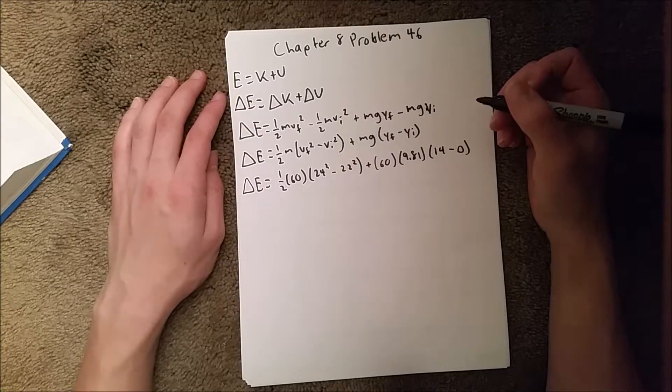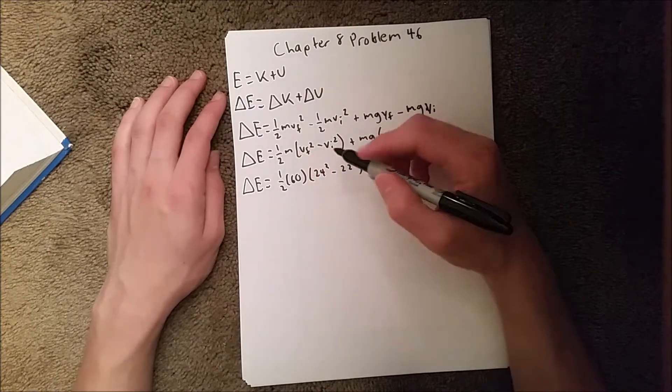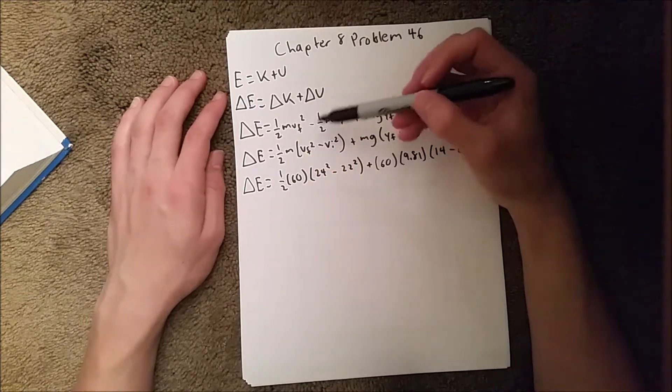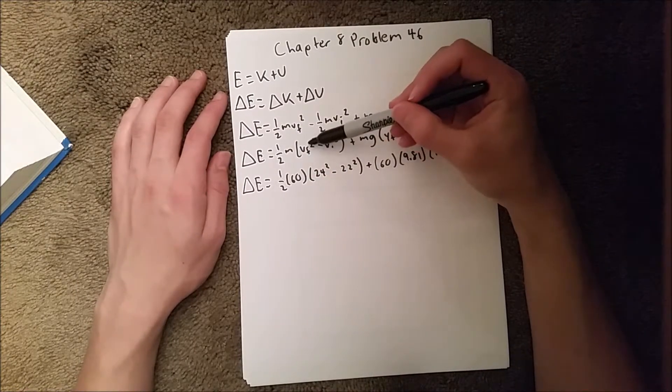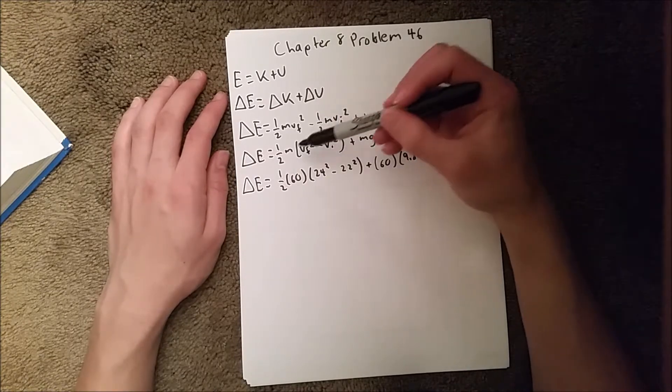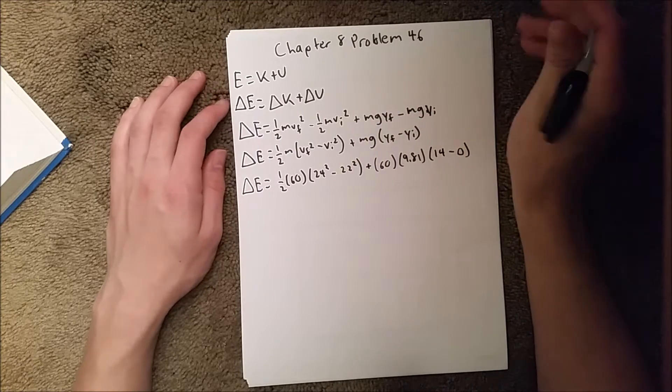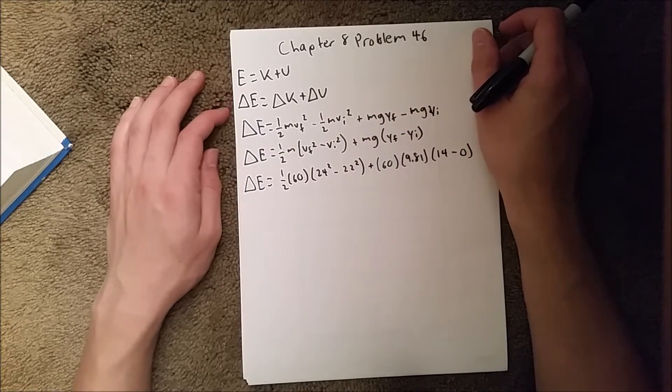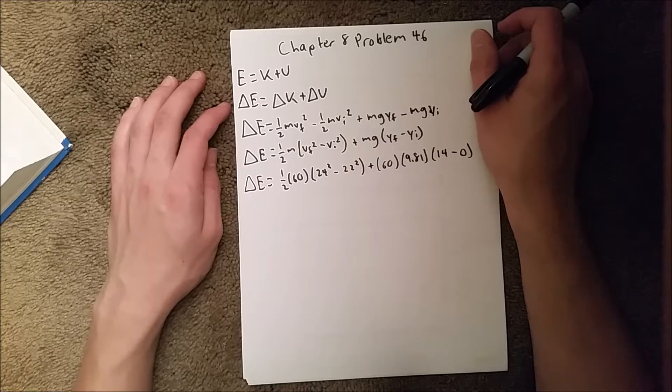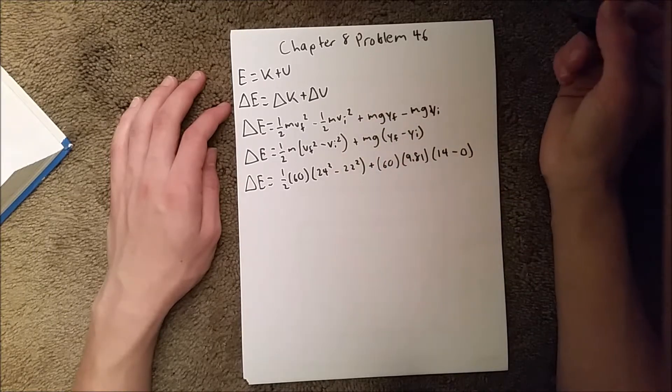One thing to be careful of when you're doing delta K: you have to make sure you do it in this format, like v final squared minus v initial squared. You can't just do v final minus v initial all of that squared, because when you multiply those out, you will not get the same number. You have to make sure you square each individual term on the inside.